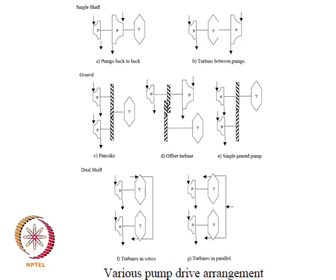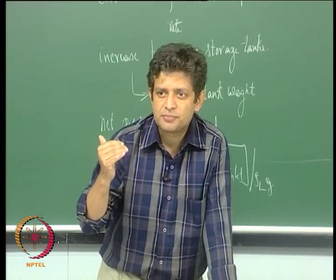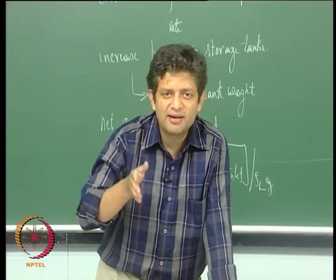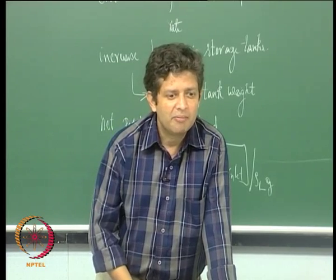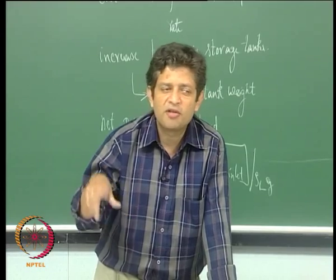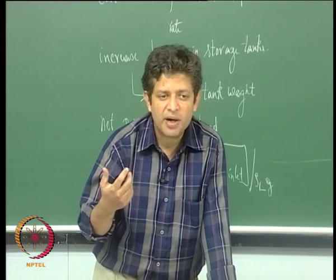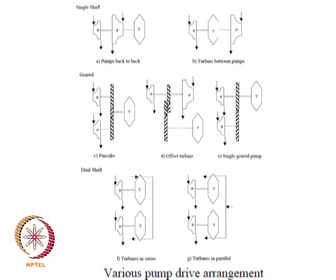This is similar to what some of you have studied in IC engines — the problem of balancing. If a piston is moving inside a cylinder and it is not properly balanced, problems arise. If you have two cylinders opposed, the imbalance in loads cancels out. Or with a radial arrangement of cylinders there is no balancing problem. This is very similar to the axial thrust problem here — the back-to-back arrangement takes care of the axial thrust.